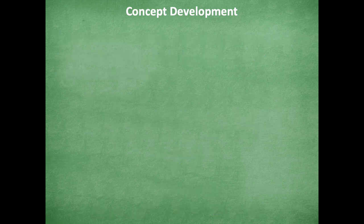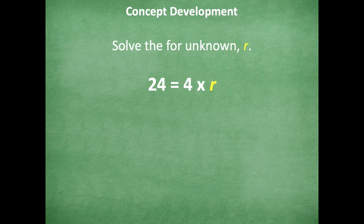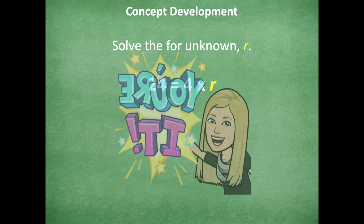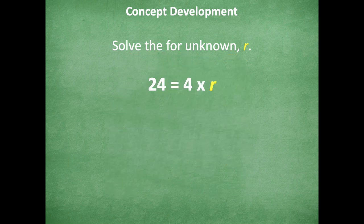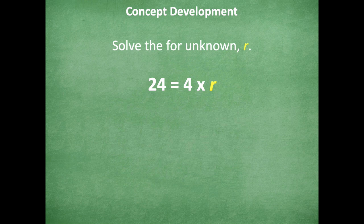All right, so we're going to solve for the unknown, which happens to be r in this problem. So 24 equals 4 times r. So I want you guys to try and solve that problem. Remember, 4 is going to represent, because it's the first factor, how many groups there are. And then you have to find how many are in each group. So you're it. Go ahead and pause the video. Solve for 4 times r equals 24. And then click play when you're ready to go over it together.